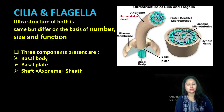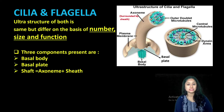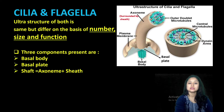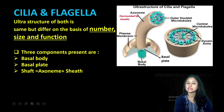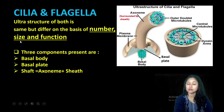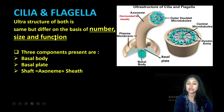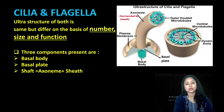Cilia and flagella — the ultra structure of both cilia and flagella is going to be the same, but they are going to differ on the basis of number, size, and function. Number of cilia — they are going to be more as compared to flagella. Size of cilia is going to be smaller as compared to flagella. And in terms of function, cilia show synchronous movement, while flagella show asynchronous movement.